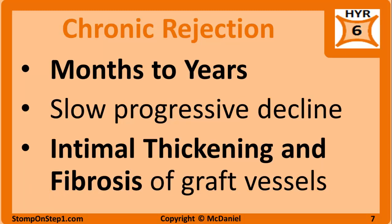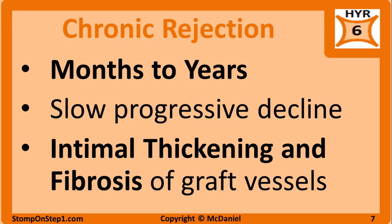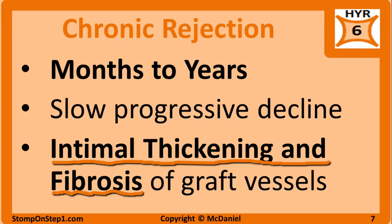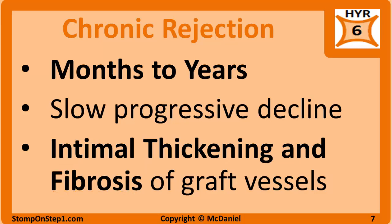Chronic rejection is the highest yield type of transplant rejection. It occurs months or years after the organ transplant surgery. The exact mechanism is not well understood, but it probably involves a combination of type II and type IV hypersensitivities directed at the foreign MHC molecules. Chronic rejection can be thought of almost as accelerated aging — a slow, progressive decline in organ function. It results in intimal thickening and fibrosis of the graft vessel, leading to slowly progressing organ atrophy. There is no treatment available, and these patients need to receive a new organ transplant as soon as possible.